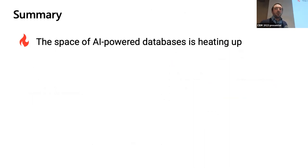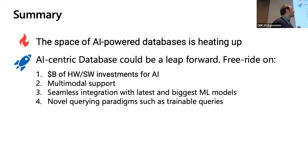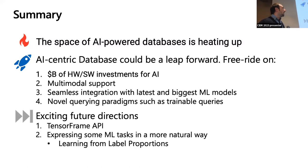Summary, the space of AI powered databases is heating up. This is pretty much because 80% of the data is unstructured out there, and machine learning allows us to unlock access to this 80% of the data. We think that AI-centric databases could be a leap forward in this direction. We piggyback on the billions of dollars that have been poured into hardware and software for AI. We added multimodal support. We do seamless integration with the newest and bigger machine learning models. We also introduced some new query paradigm that are interesting, such as trainable queries. Looking forward, there are many interesting things that we are exploring. One of them is that since we are building a set of database operators, we can basically build a TensorFrame API on top. As you can imagine, this is basically a data frame API on top of our tensor runtime. And basically this is allowing us to surface all these features also through the pandas user. So we think that we can provide pandas users GPU acceleration, differentiability, and multiple data as well.